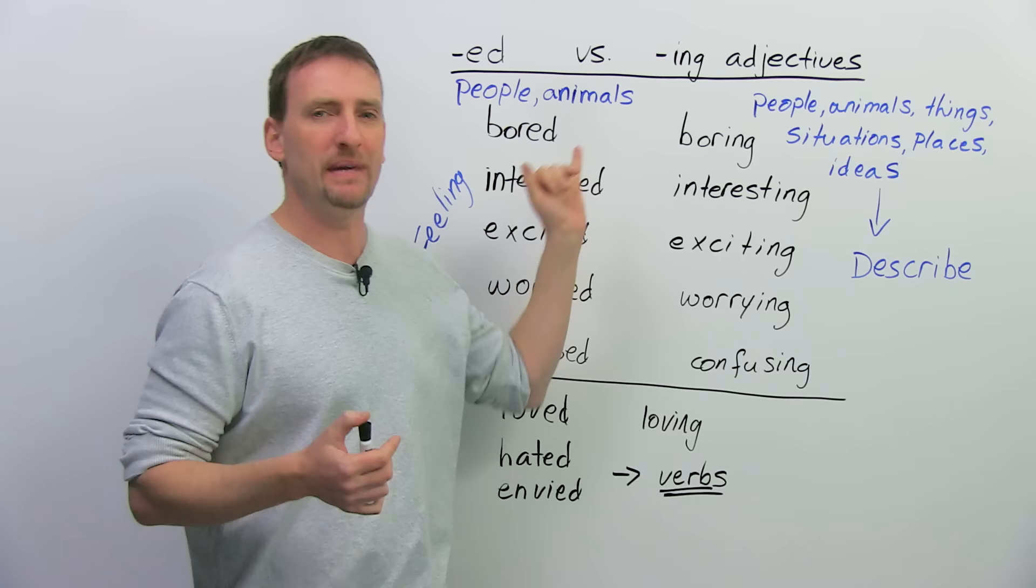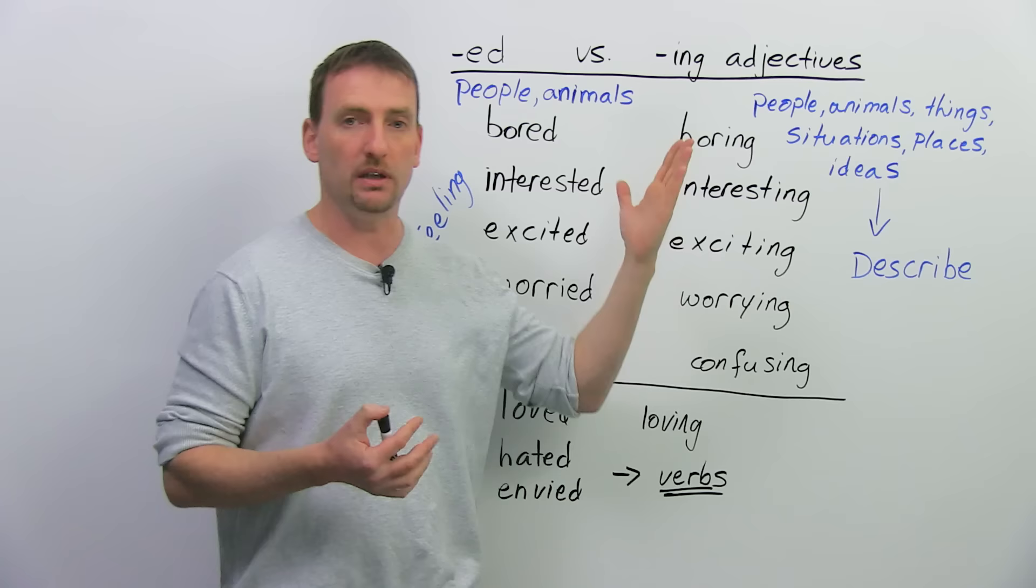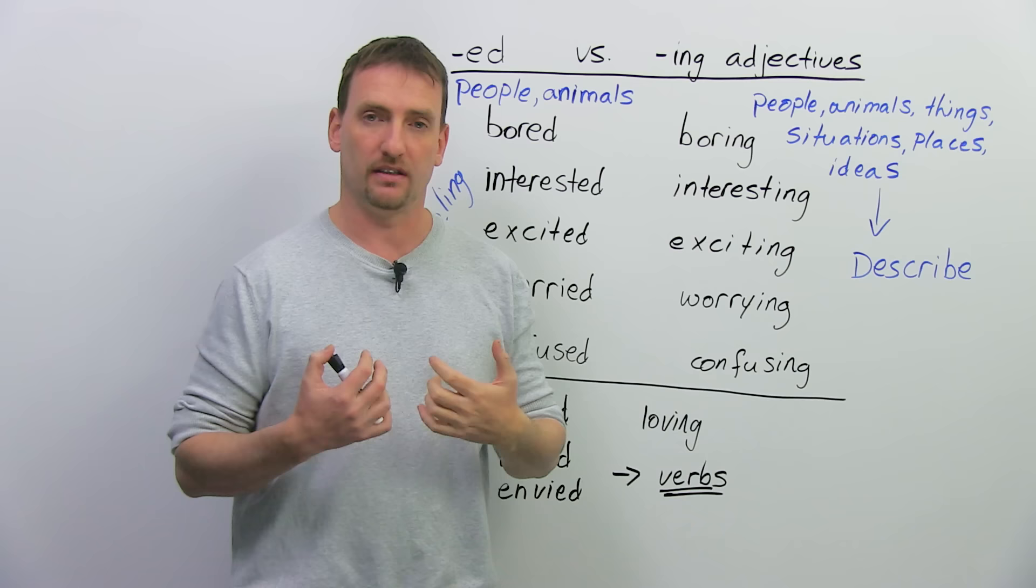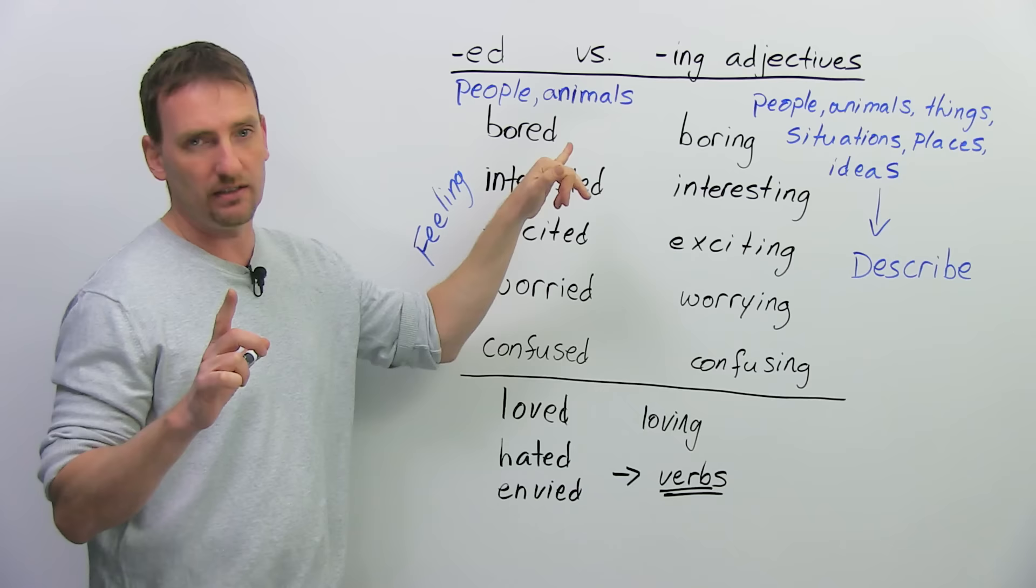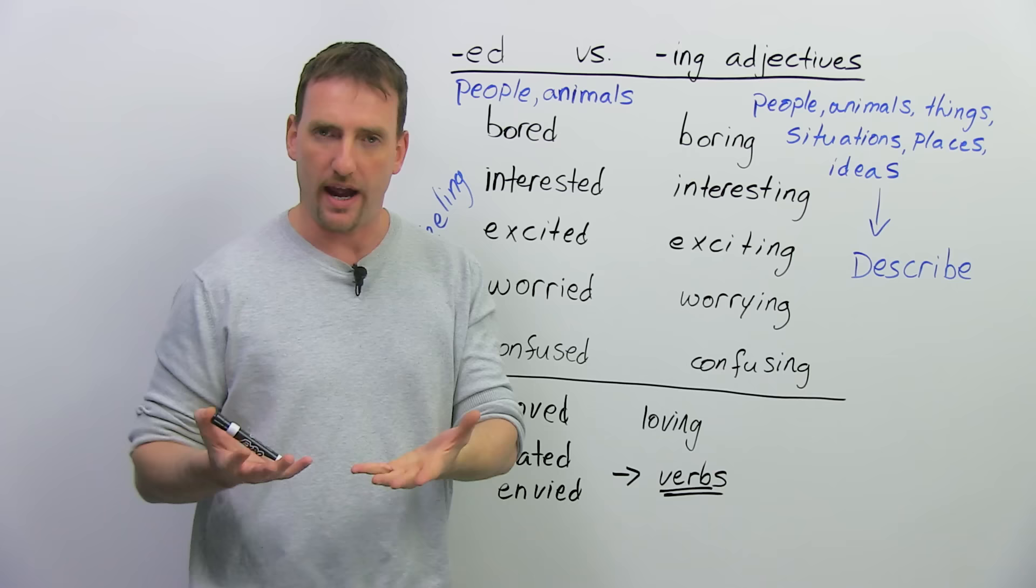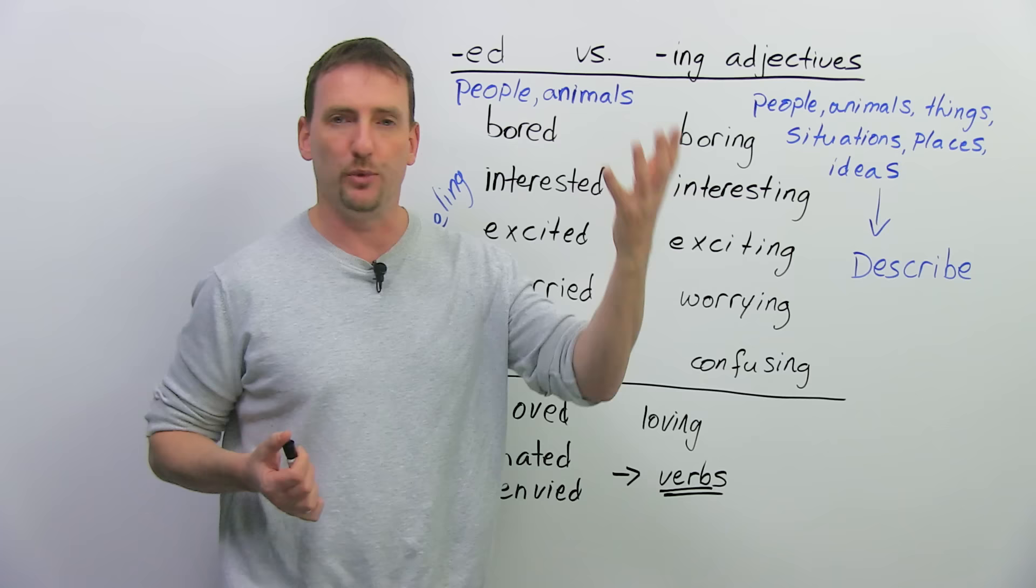Now, what does it mean to be bored and what does it mean to be boring? When we talk about bored, we're describing a feeling. When we talk about interested, we're describing a feeling. So all of the -ed adjectives are actually feelings, and you can only use them to talk about people and sometimes animals. Why? Because things, like chairs or tables or whatever, they don't have feelings.